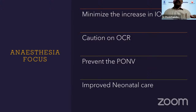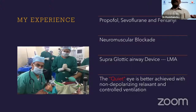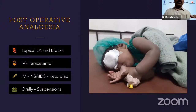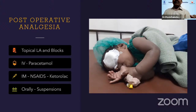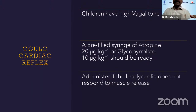The focus of our anesthesia is to minimize IOP increase, prevent the oculocardiac reflex (OCR), and prevent nausea and vomiting. Induction is with propofol, sevoflurane, and fentanyl. For neuromuscular blockade, we use non-depolarizing muscle relaxants; quieter control is better achieved with them using controlled ventilation. I prefer LMA, which controls IOP. For post-operative comfort, local anesthetic blocks are given — peristomial infusion is available, and if the patient is old enough, caudal block, followed by oral suspension once recovered. For bradycardia below 60, we give atropine or glycopyrrolate.